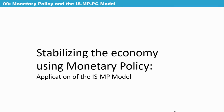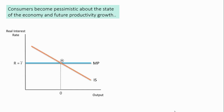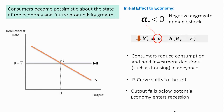Let's see how the ISMP model works in action. The first scenario we are given is that consumers become pessimistic about the economy. The first thing that is important is to identify what parameter is causing a shock.